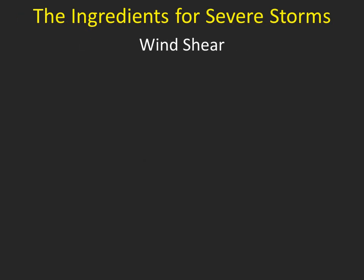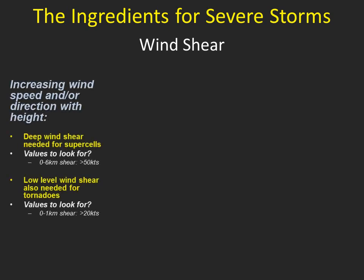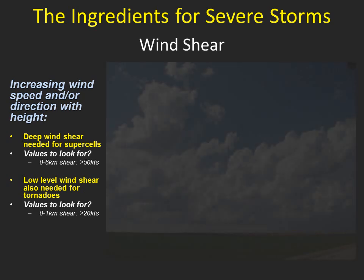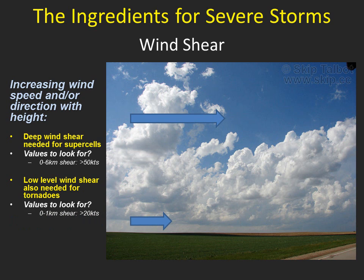Now that we've covered lift, instability, the cap, and moisture, let's talk about wind shear — one of the most vital components in the development of severe thunderstorms. In the simplest terms, wind shear is generated by increasing wind speed and/or direction with height. We need deep, strong wind shear for the development of supercells. Wind shear is measured in knots, and we usually look for deep wind shear within a layer from the surface to about 6 km above the ground. For the development of tornadoes, we need strong low-level wind shear, usually looking at the surface to about 1–3 km. Here is a simple example: you have very strong winds aloft — notice the high clouds are tilted in the direction of the upper-level flow — while the winds near the surface are slower. The difference between these two wind speeds is the shear, and since we are only dealing with changes in speed with height, we call this speed shear, which results in a rotational component.